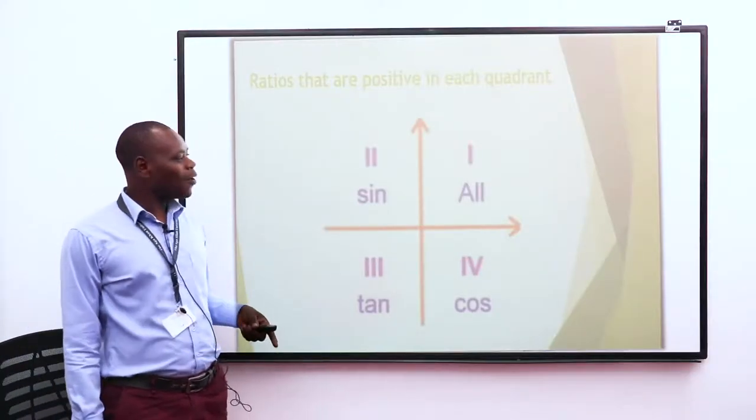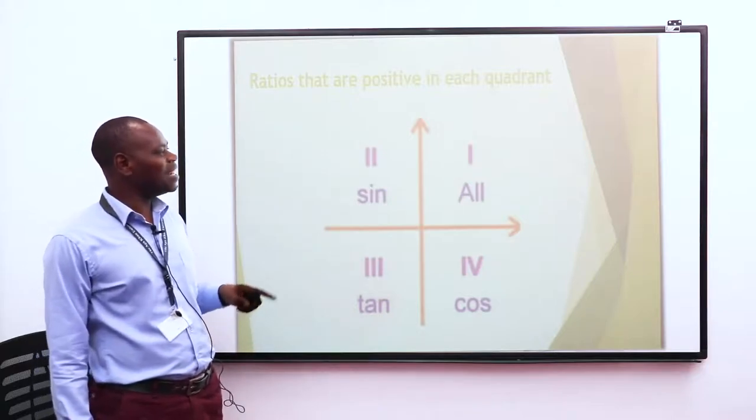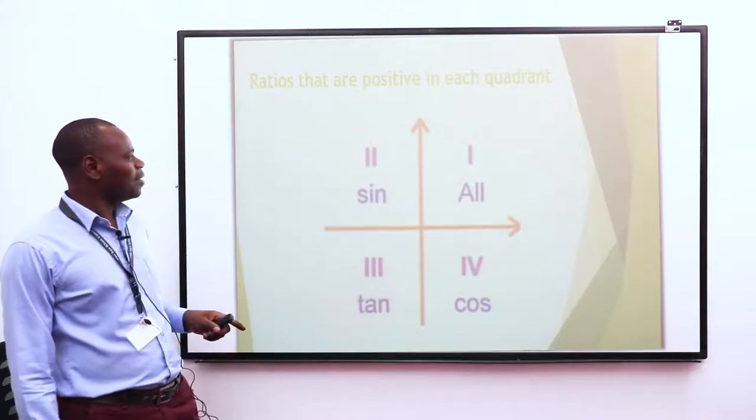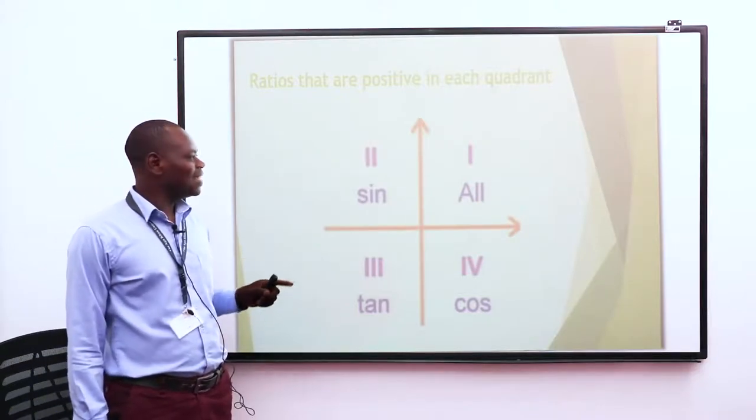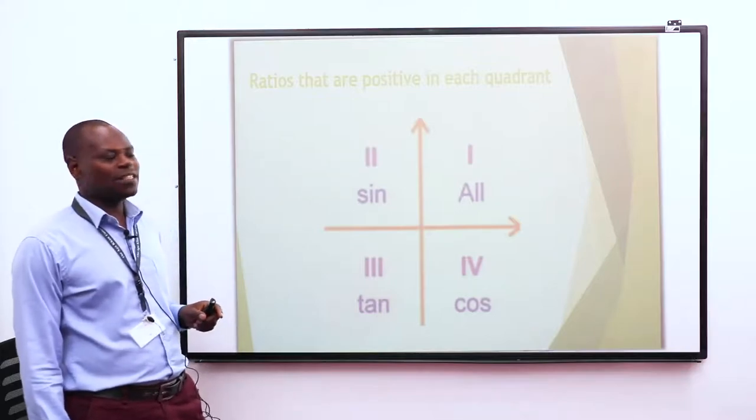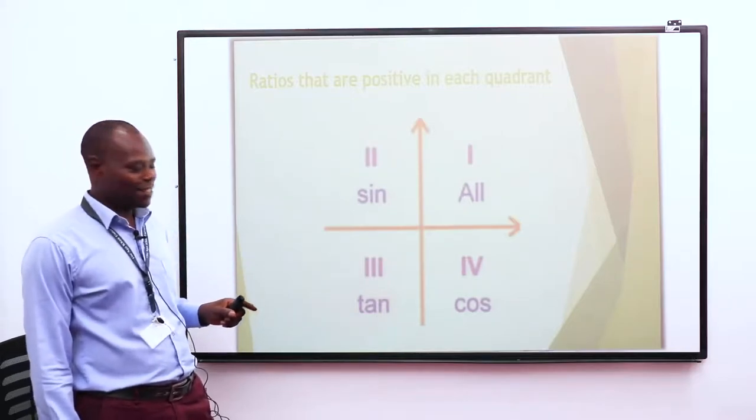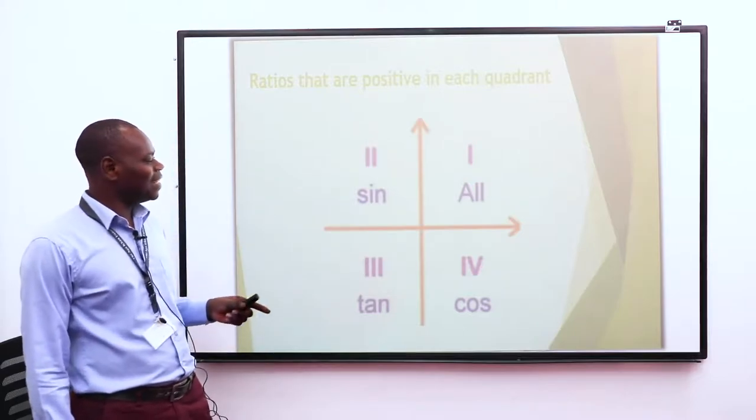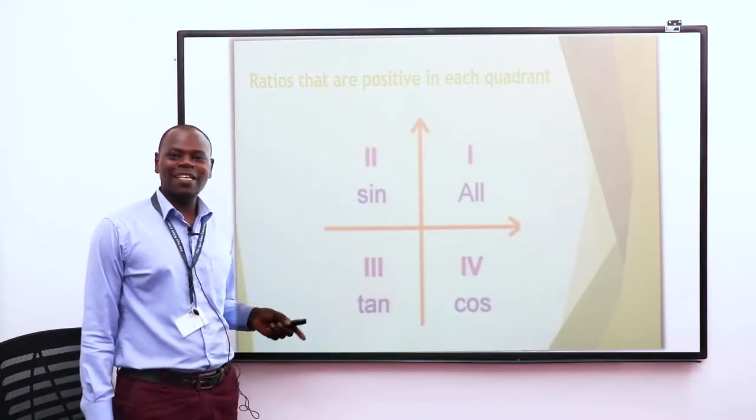We can conclude that all the trigonometric ratios in the first quadrant are positive, as seen here. Also, only sine is positive in the second quadrant. In the third quadrant, only tan is positive. And lastly, in the fourth quadrant, only cosine is positive.